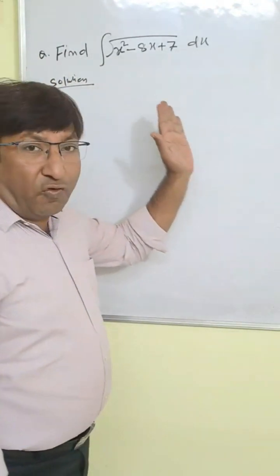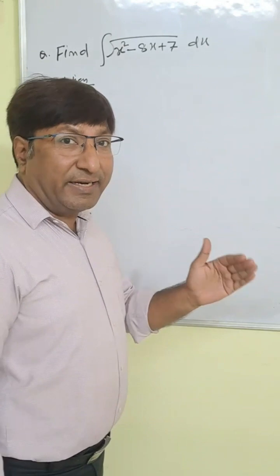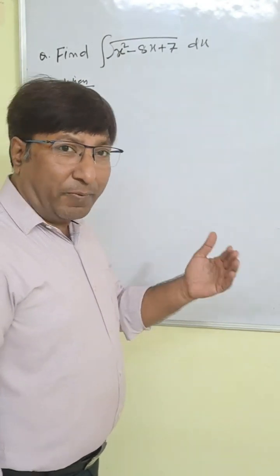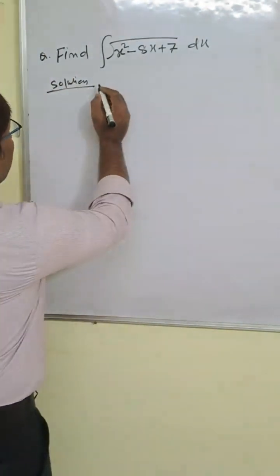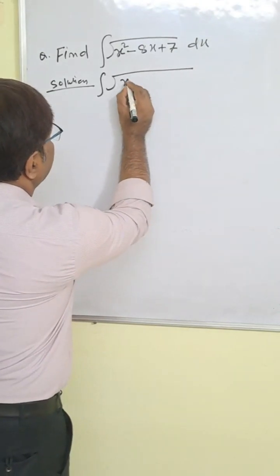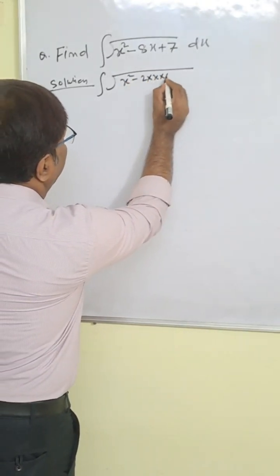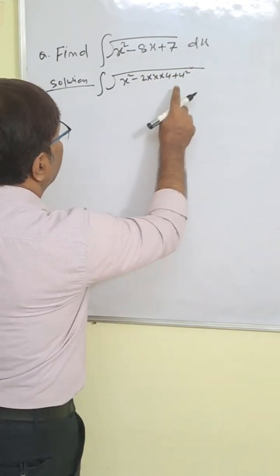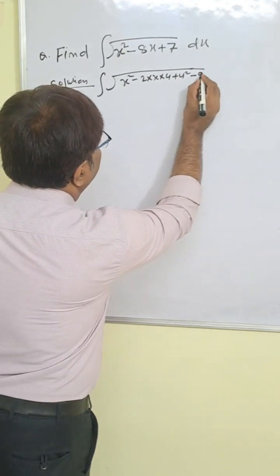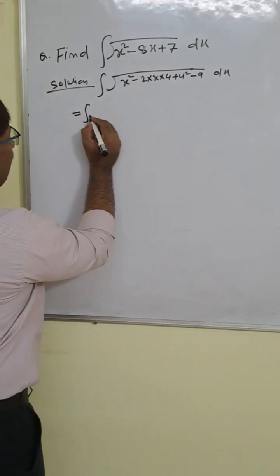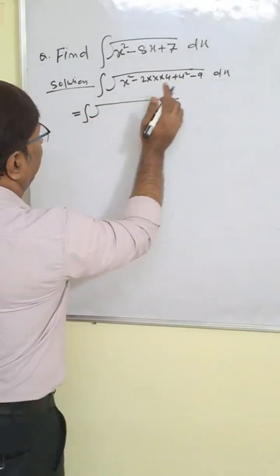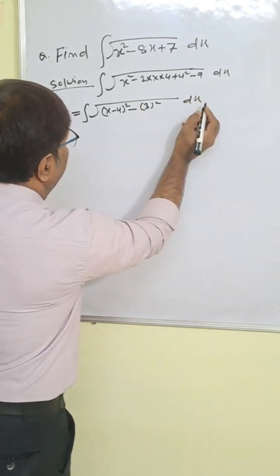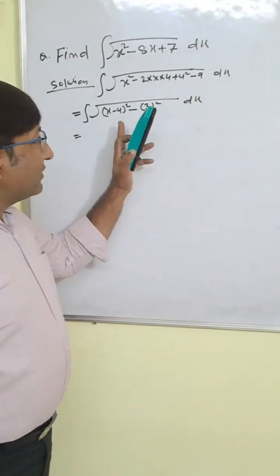Find integration of root under x square minus 8x plus 7 dx. For this type of question, first you convert this number as a square minus x square or a square plus x square or x square minus a square form. So here integration root under x square minus 8x. This is x square minus 2ab, so a is x and b will be 4, so b square is 4 square equals 16. But you have 7 only, so 16 minus 7 is 9. So we have to subtract 9. So we write root under (x minus 4) whole square minus 9, which is minus 3 square, dx.